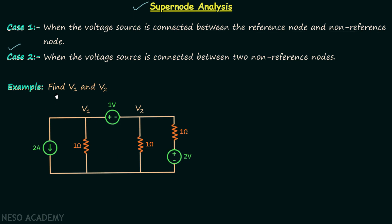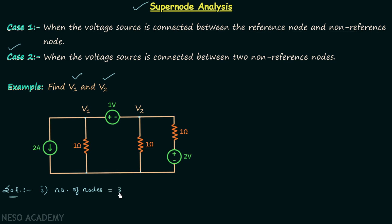In this example we are required to find V1 and V2. In this particular network we have one, two, three, and four nodes. But if you look at this branch, you will find there is no element in this branch, therefore the potential at this node will be the same as the potential at this node. So they are the same nodes, and hence we have one, two, and three nodes. This is step number one, in which we identify the total nodes present in the network — the number of nodes is equal to three.